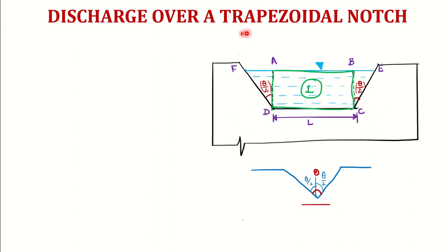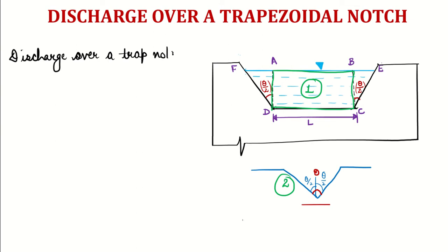We have to calculate the discharge through a trapezoidal notch. We now know that one part is the rectangular notch and the other part is the triangular notch. So I can write: discharge over a trapezoidal notch is equal to the discharge due to a rectangular notch plus the discharge due to a V-notch. When you sum up the discharges of both notches, you get the discharge over a trapezoidal notch.